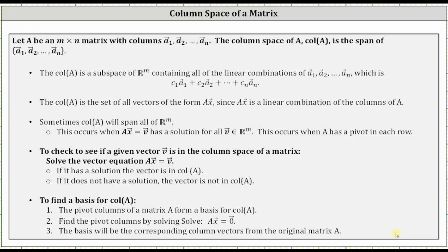Welcome to a lesson on the column space of a matrix. Let A be an m by n matrix with columns equal to the vectors a sub one through a sub n. The column space of A is equal to the span of the vectors a sub one through a sub n. The column space of A is a subspace of R m, where m is the number of rows in matrix A.